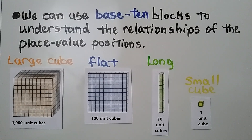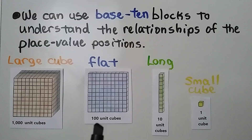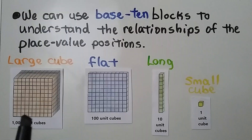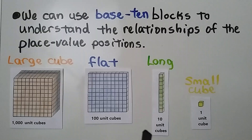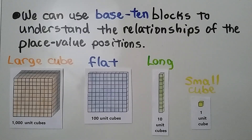We can use base 10 blocks to understand the relationships of place value positions. This is one large cube — it's 1,000 unit cubes. This is a flat; it's 100 unit cubes. If we had 10 of these, we'd have a large cube. This is called a long, sometimes called a rod. It's 10 unit cubes. If we had 10 of these, we could make a flat. And this is one small cube. If we had 10 of them, we could make a long.